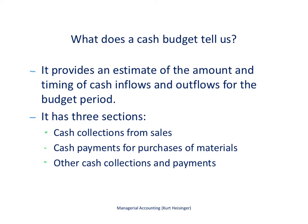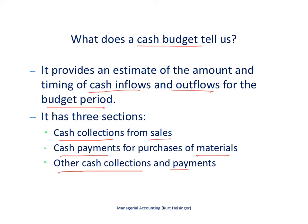We'll spend a little more time looking at the cash budget for Jerry's Ice Cream. This is an important budget for most organizations and has many different components. The cash budget provides an estimate of the amount and timing — which is really important — of cash inflows and outflows for the budget period. It has three sections: the first covers cash collections from sales, the second covers cash payments for purchases of materials, and the last is a catch-all for any other cash collections and payments. We'll look at it across two slides since there's so much information.